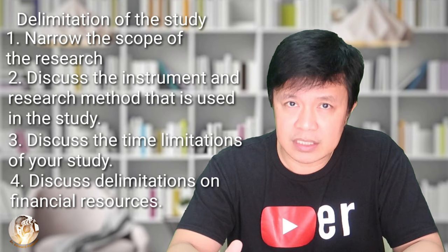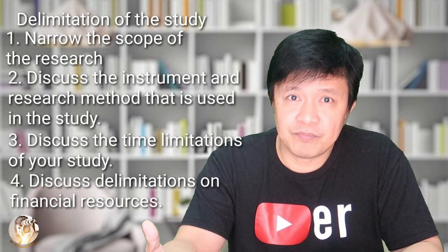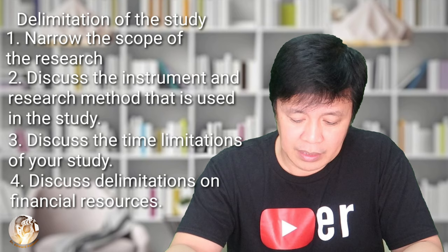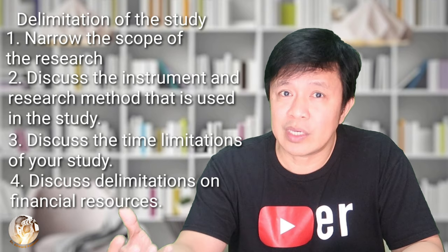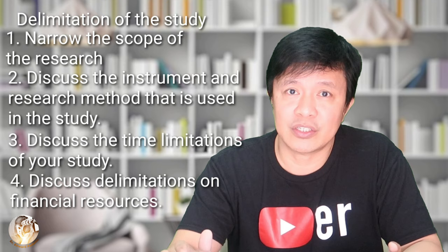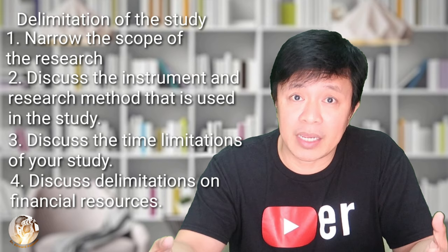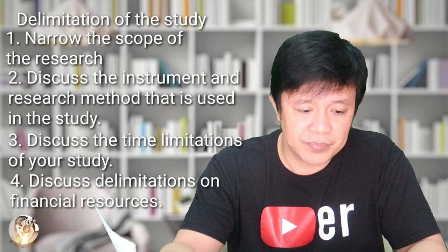Another element is financial resources. Because of financial restrictions, you were only able to implement this in one particular school out of three. You have to include this rationalization under your delimitation. This also includes the discussion of why you excluded the other schools — aside from financial restrictions, perhaps those other schools did not implement this particular strategy, and the school you chose is the one that piloted it. These are the contents of the scope and delimitation of your study.